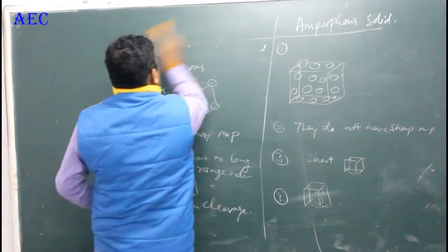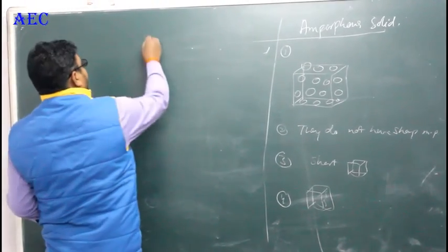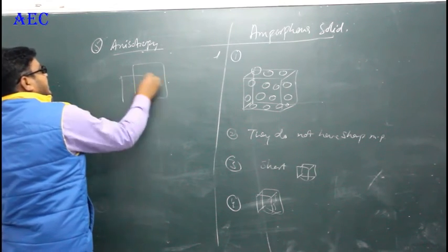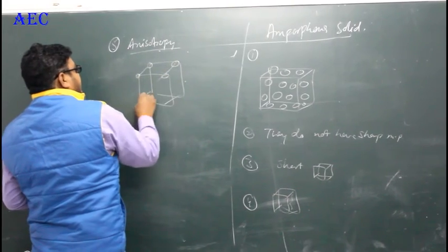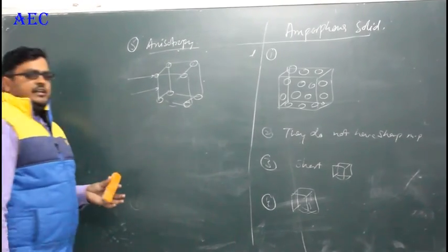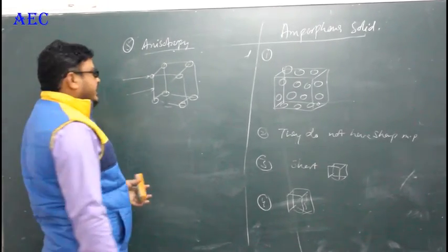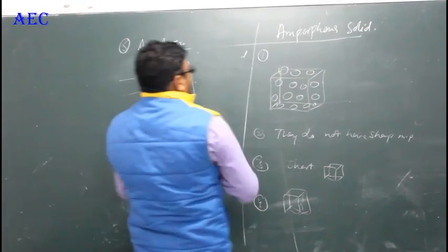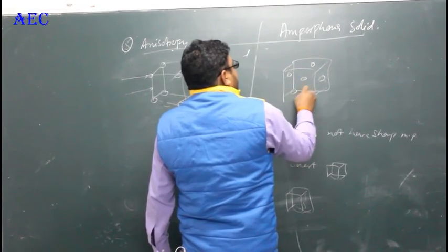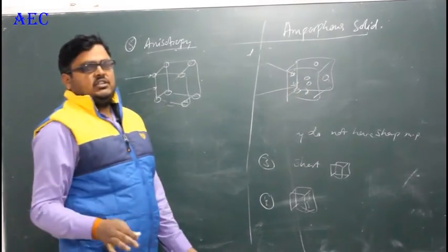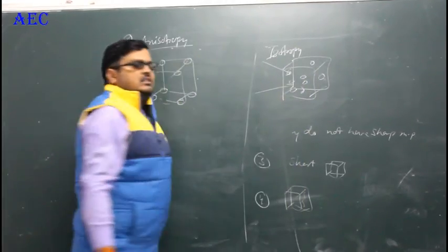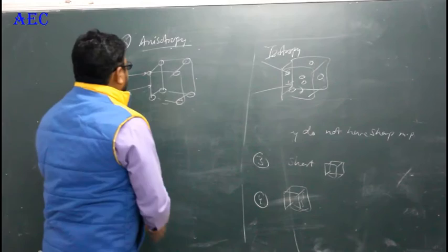The fifth point: crystalline solids show anisotropy, meaning different properties in different directions. For example, a reaction at the corner of a crystalline solid behaves differently than at the edge. Amorphous solids, however, have atoms, molecules, and ions distributed everywhere, so they show isotropy — the same property in all directions.